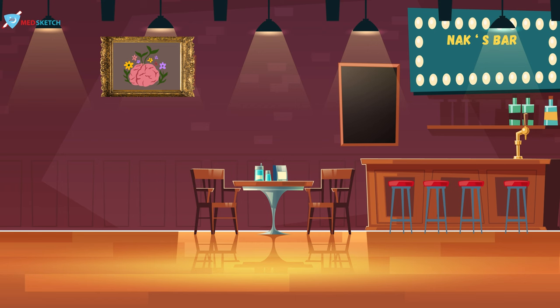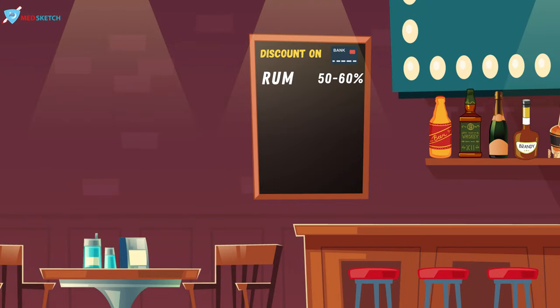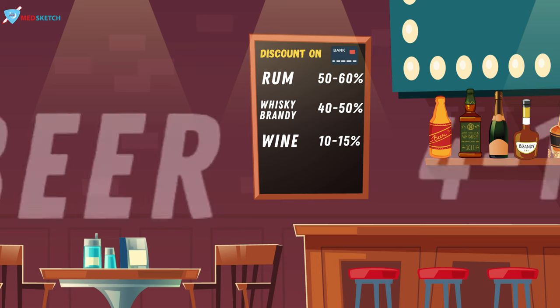Let's talk about the different types of alcoholic beverages. You don't have to remember the percentages exactly but you should have a rough idea. The types are represented by a shelf with bottles. From right to left: rum has approximately 50 to 60% alcohol; whiskey and brandy both have 40 to 45%; wine has 10 to 15%; and beer, the mildest, contains 4 to 10% alcohol. Just remember rum is the most concentrated and beer is the lightest.